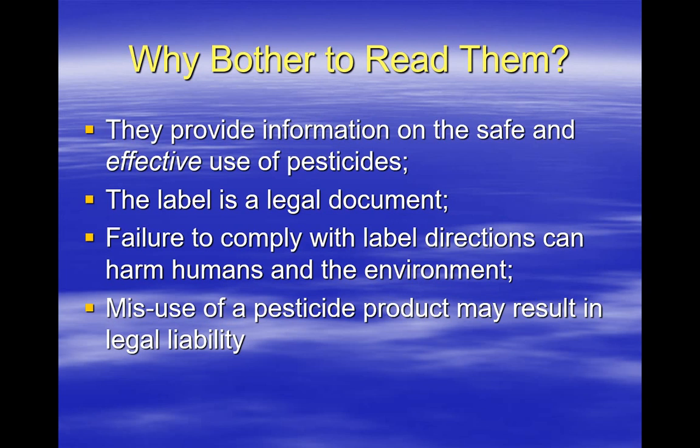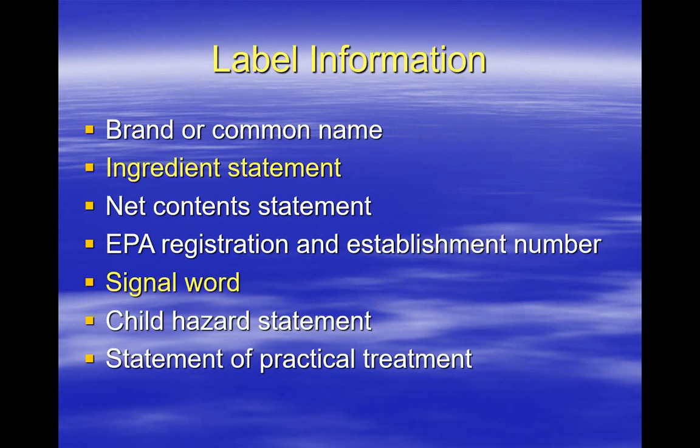Some labels include endangered species considerations and will require an applicator to visit the EPA ES webpage to see if there are additional use instructions. So what kind of information can be found on a label?